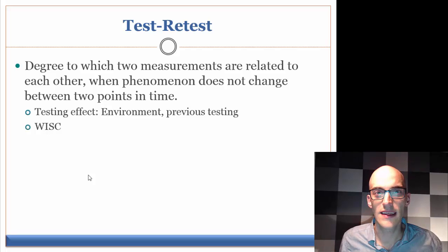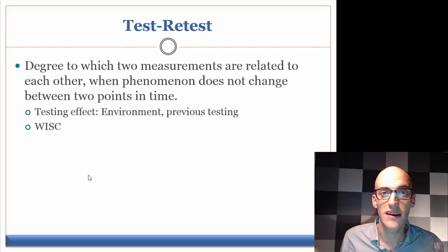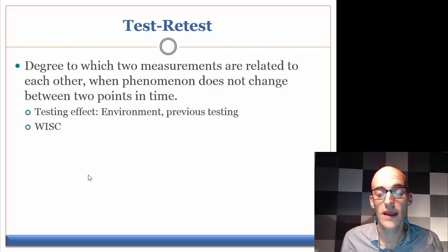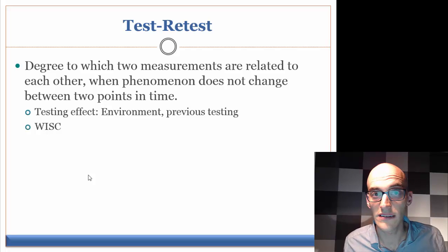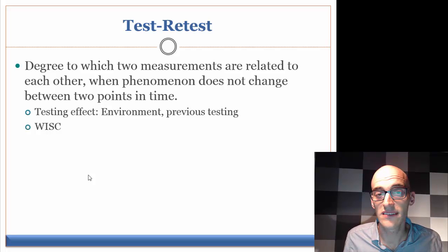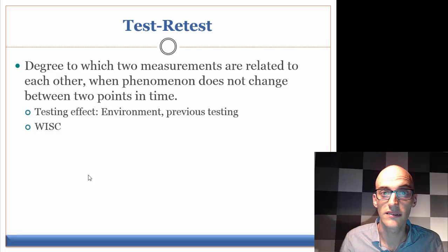There are a number of things that could affect test-retest reliability, such as testing effects related to the environment — for example, perhaps you took your ACT or SAT twice and did better the second time because the environment was more familiar. Another factor is previous testing exposure, so researchers need to make sure there's an adequate amount of time between the two administrations. For something like a single system design where we're measuring someone's depression over time, we'd want test-retest reliability to be fairly high so we can accurately assess variations in the person's symptoms.